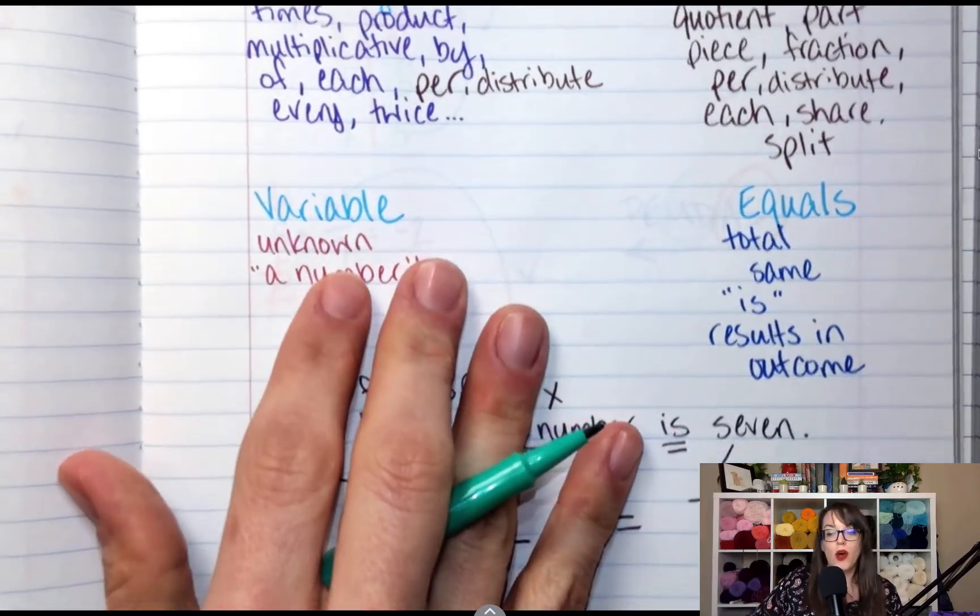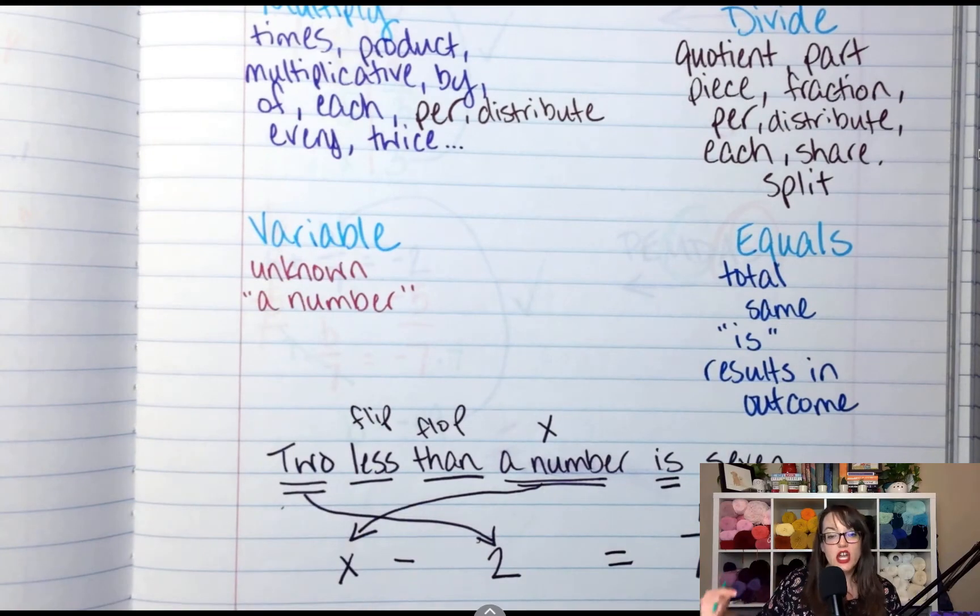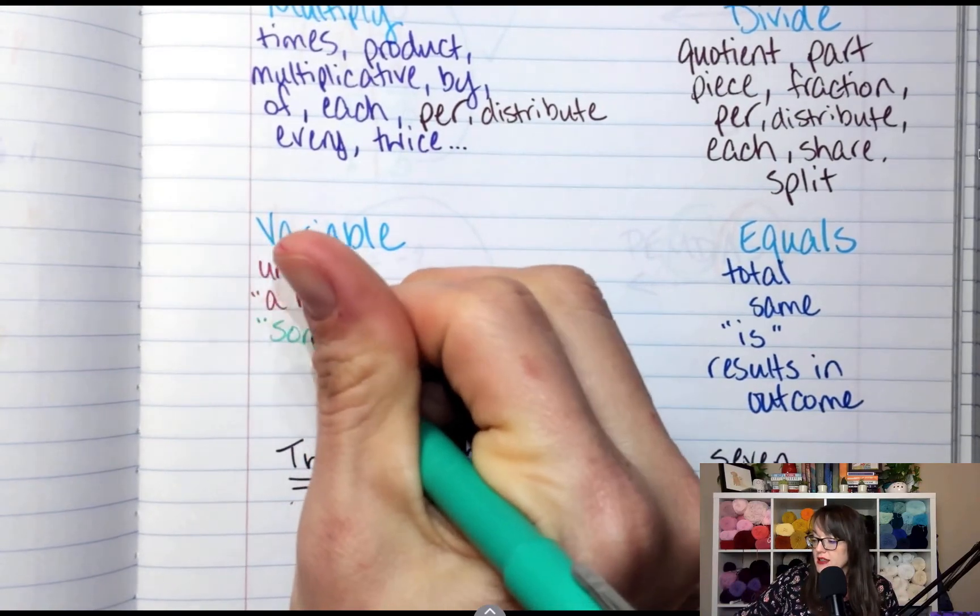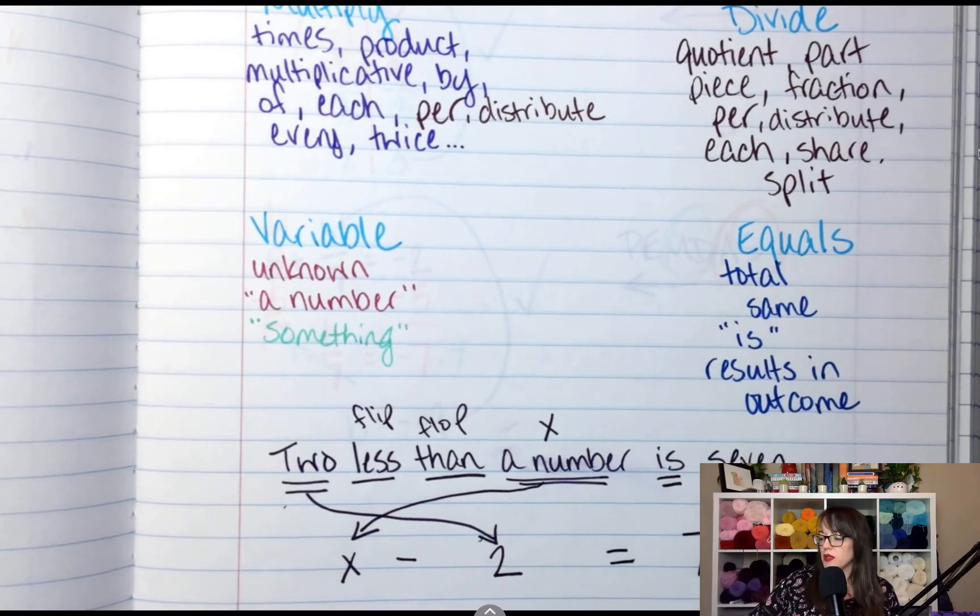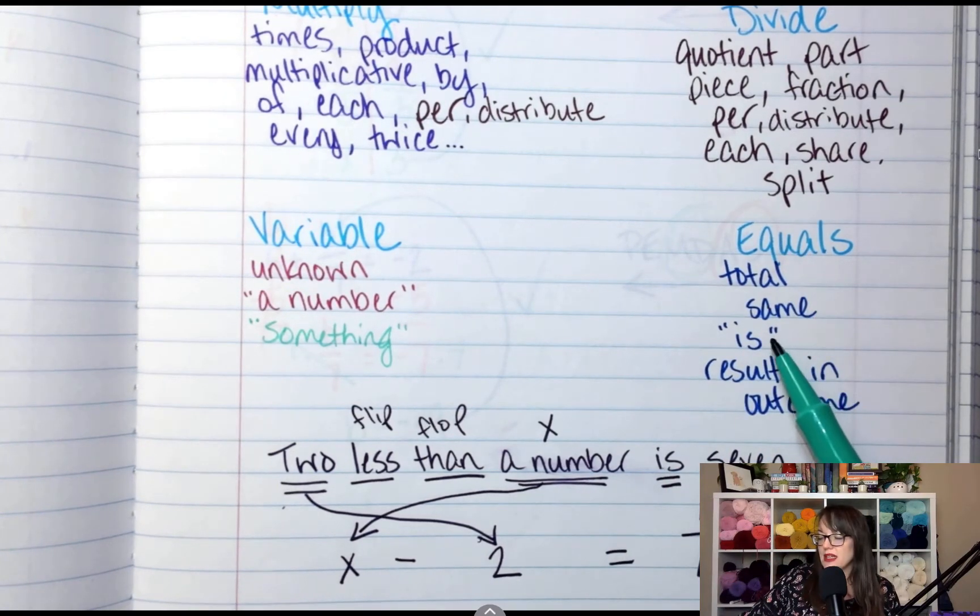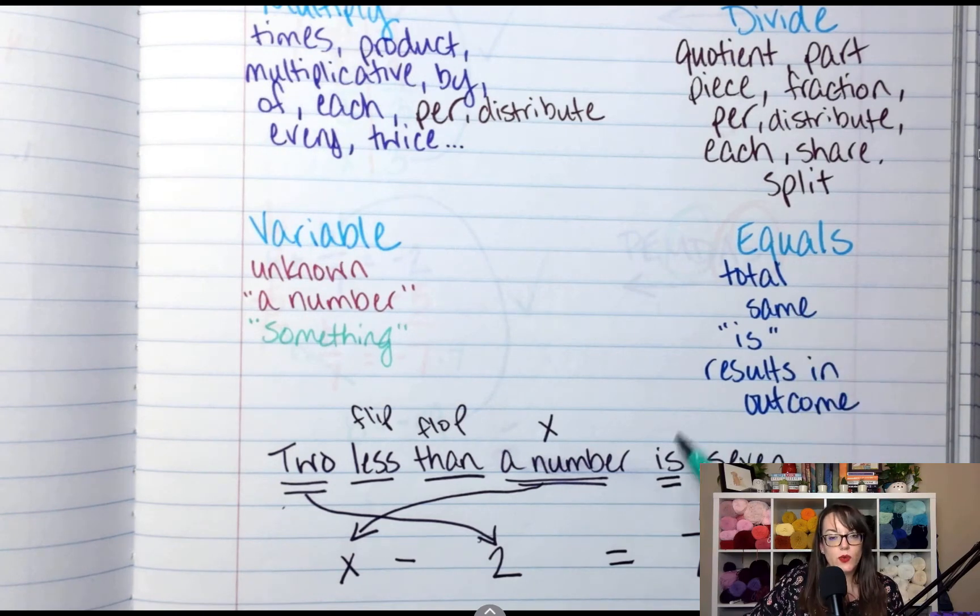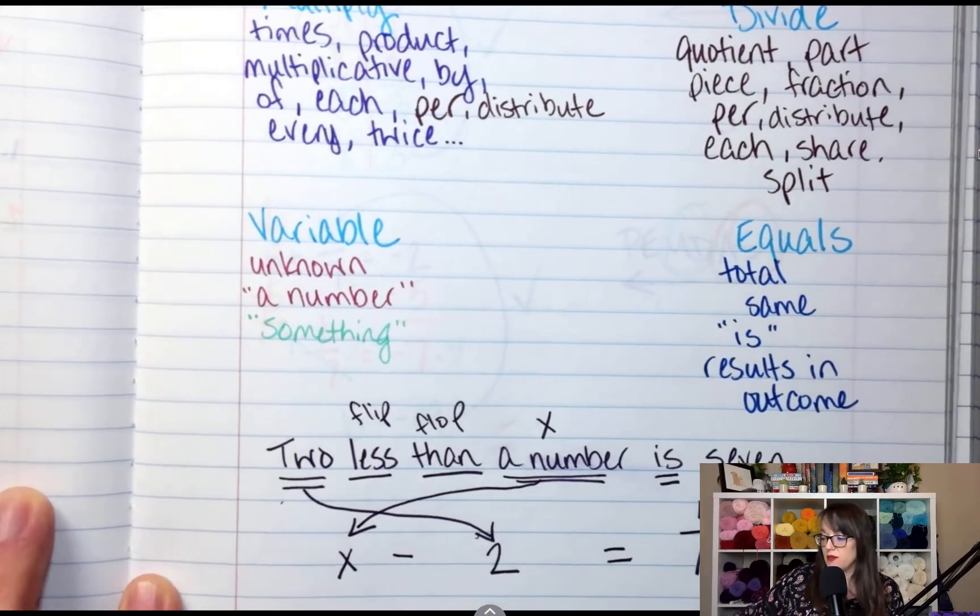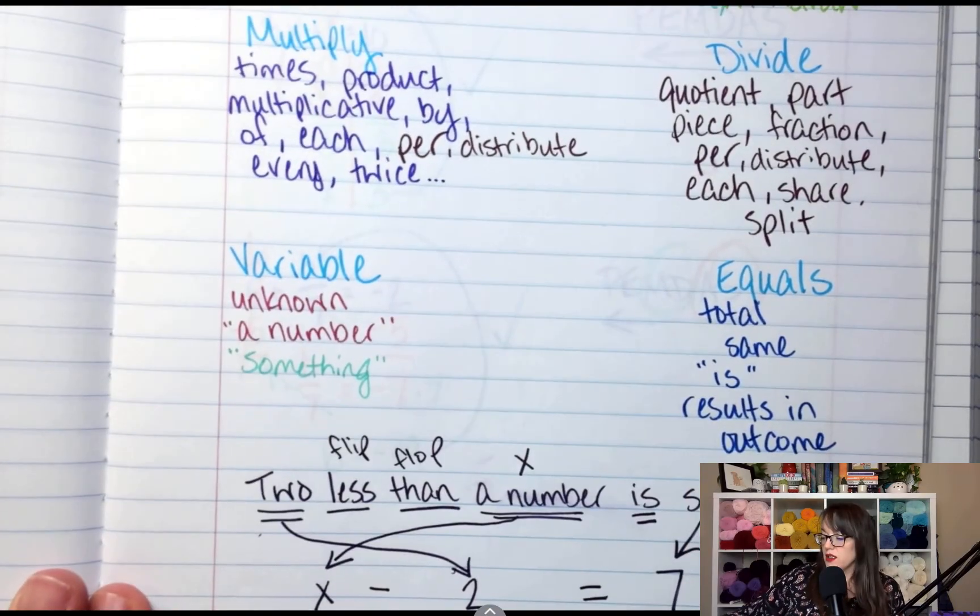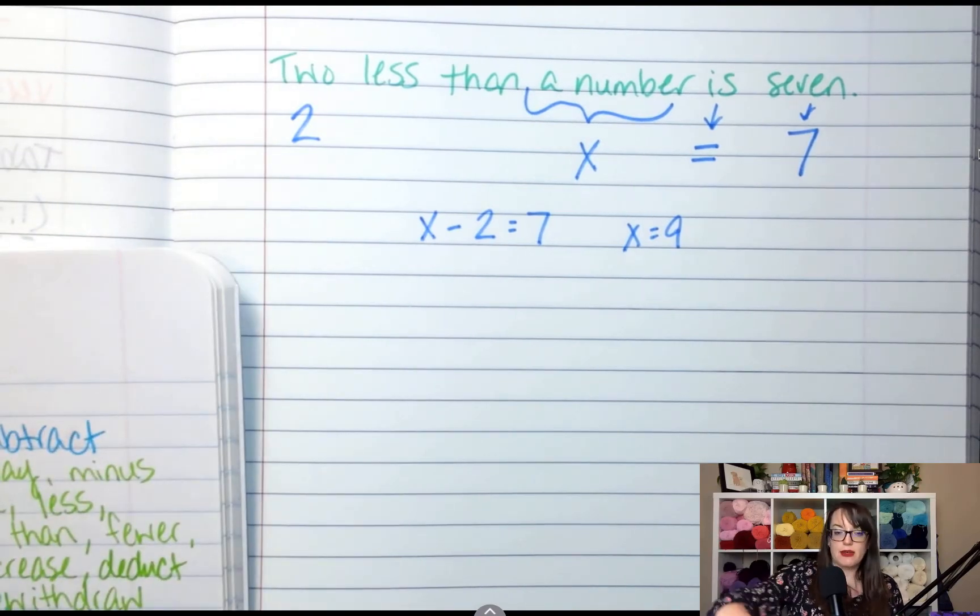A variable. The one thing you don't know. If it says an unknown or a number or something. You want to get real vague and just say something. Two less than something. Equals. This is the big one a lot of people don't realize. Is means equals. So when it says five plus five is, that's equals. Results in, has an outcome of, same. Those mean equal. If you can think of any others, let me know. I'd love to add to my list. We usually hang this up in the classroom. All right. So we've got our equation. Now let's look at some examples.